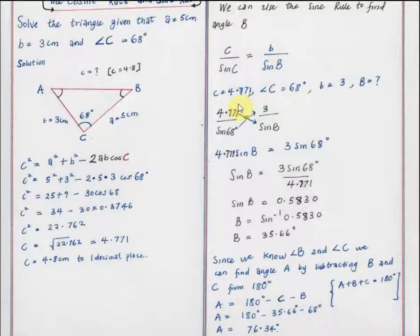Now for C, we're going to use C equals 4.771, which is what we got here. We're not going to use the 4.8 because that's what we approximated, so we make sure our answers are not far from what they're supposed to be. So we use C equals 4.771. And angle C is 68 degrees. B is 3 centimeters. Angle B is what we're looking for.